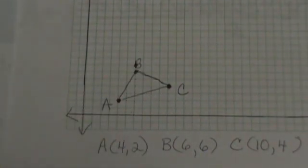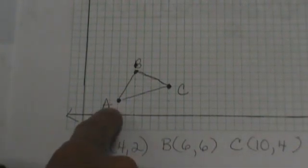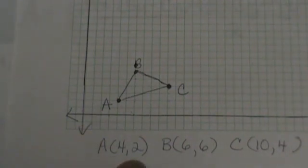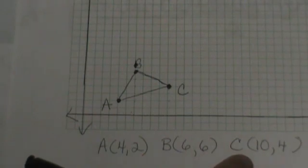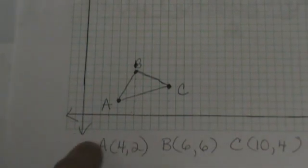The first thing we're going to do is identify these three vertices. Identify A and write its coordinates down. Identify B and write its coordinates down. Identify C and write its coordinates down.